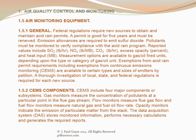Measurement options are available to gas and oil fired units depending upon the type and category of unit. Exemptions from acid rain permit requirements, including exemptions from continuous emissions monitoring, abbreviated CEMS, are available to certain types and sizes of emitters by petition. A thorough investigation of local, state, and federal regulations is required for each new source.